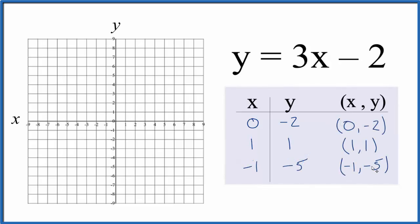We have 0 for x and then minus 2. Then we have 1, 1, and finally we have minus 1, then minus 5. So these are the points on the line for y equals 3x minus 2. We can put a line over them and that's our graph for y equals 3x minus 2. Let's put a little arrow since it goes to infinity.